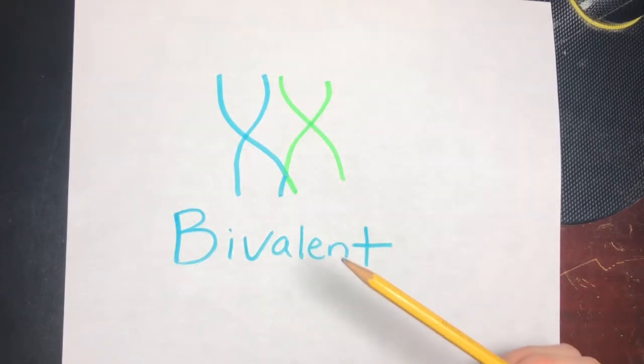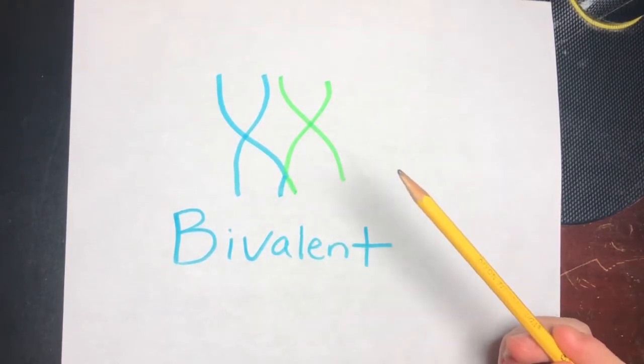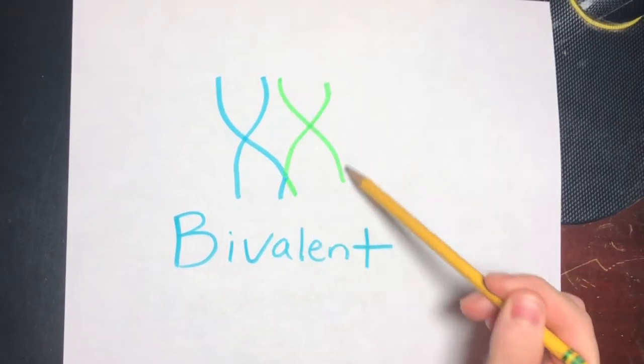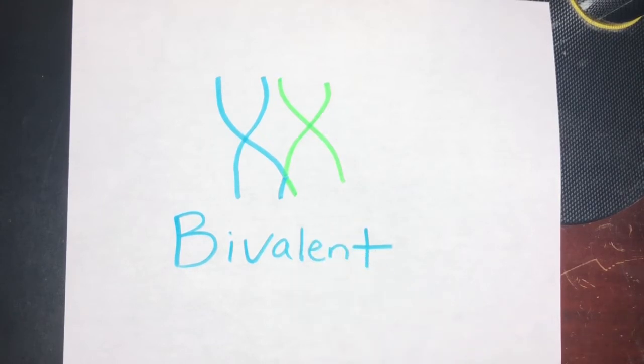So what you see here are four homologous chromatids, or two homologous chromosomes. This physical attachment you see allows for alignment and segregation of the homologous chromosomes in the first meiotic division.